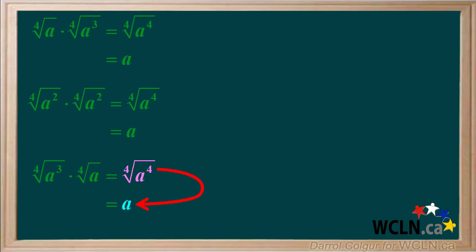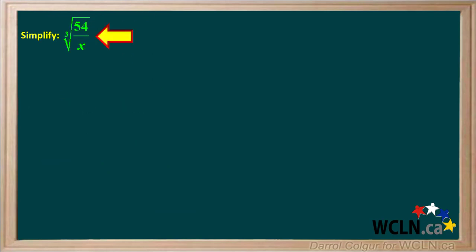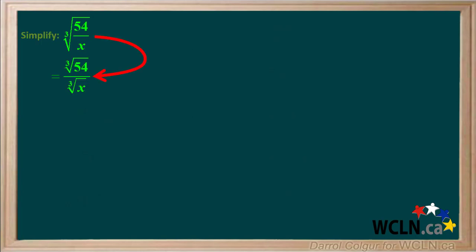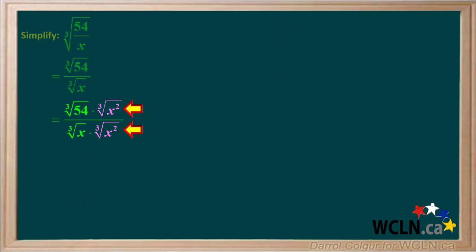In all three cases, we ended up with just a and no radicals. We'll do an example of dividing cube roots with numbers and variables. We're asked to simplify the cube root of 54 over x, and we'll assume that x is not equal to zero. The cube root of 54 over x equals the cube root of 54 divided by the cube root of x. We rationalize the denominator by multiplying both the numerator and denominator by the cube root of x squared, in order to give us the cube root of x cubed in the denominator.